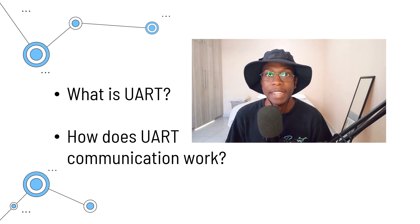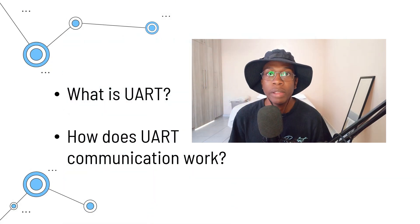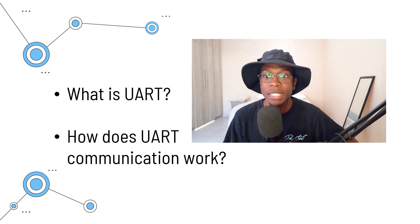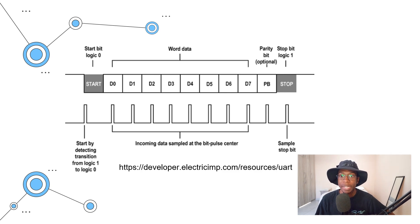Unlike some microcontrollers that require an external serial bridge like the FTDI chip, the STM32's UART2 is directly connected to the microcontroller's USB port. This means you can use UART2 for serial communication with a computer without needing additional hardware for USB to serial conversion. UART works by sending data in packets where each packet contains a start bit, 8 data bits, an optional parity bit, and a stop bit. Baud rate determines how fast the data is being transmitted, measured as the number of bits per second.